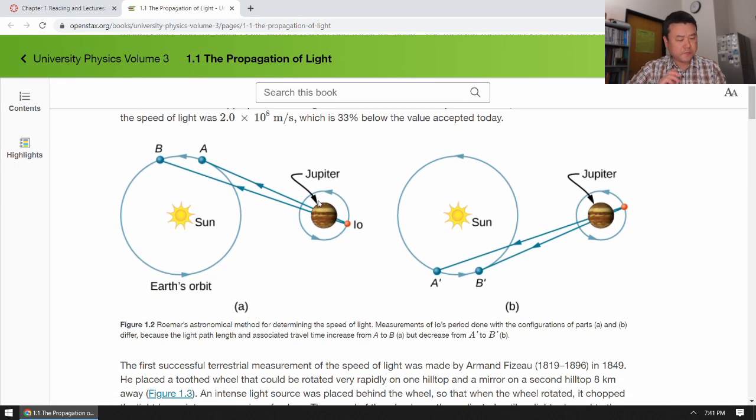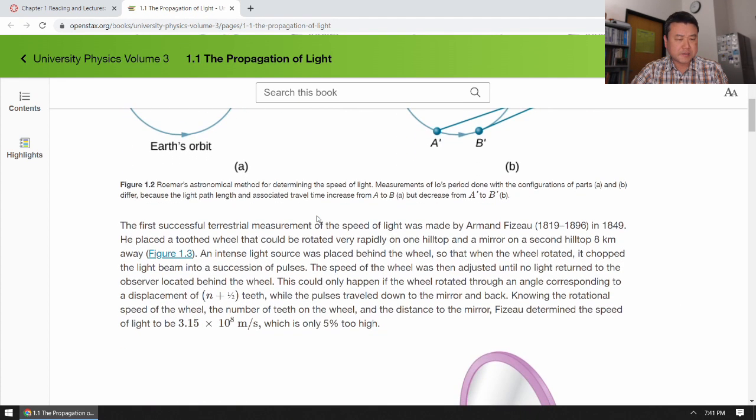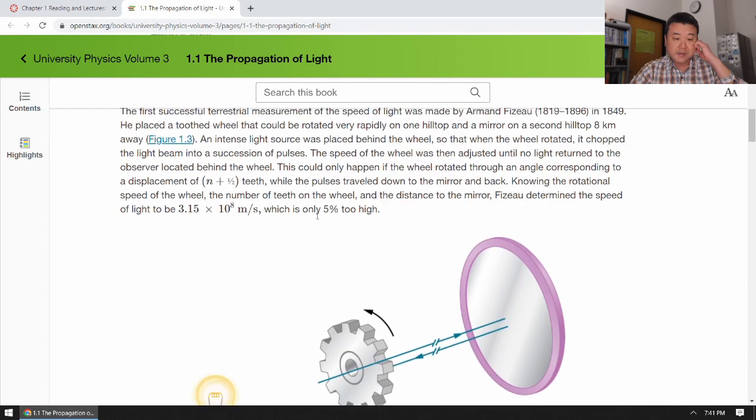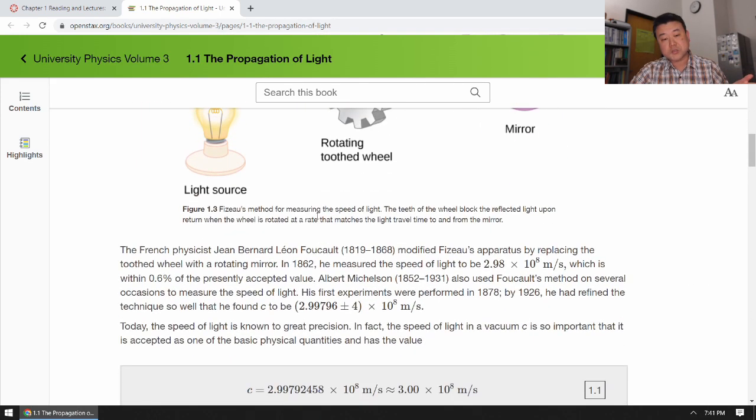Now because of the topics break between University Physics Volume 2, which ended with Maxwell's equations and electromagnetic waves, and Volume 3, which now starts with the propagation of light, it won't quite explicitly refer to electromagnetic nature of light too much.